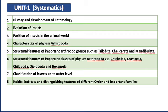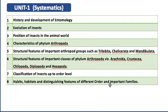Coming to Chapter One, it deals with systematics in entomology. Topics include: history and development of entomology, evolution of insects, position of insect in the animal world, characteristics of phylum Arthropoda, structural features of important arthropod groups such as Trilobita, Chelicerata, and Mandibulata, structural features of important classes like Arachnida, Crustacea, Chilopoda, Diplopoda, and Hexapoda, classification of insects up to order level, and habits, habitats, and distinguishing features of different insect orders and important families.